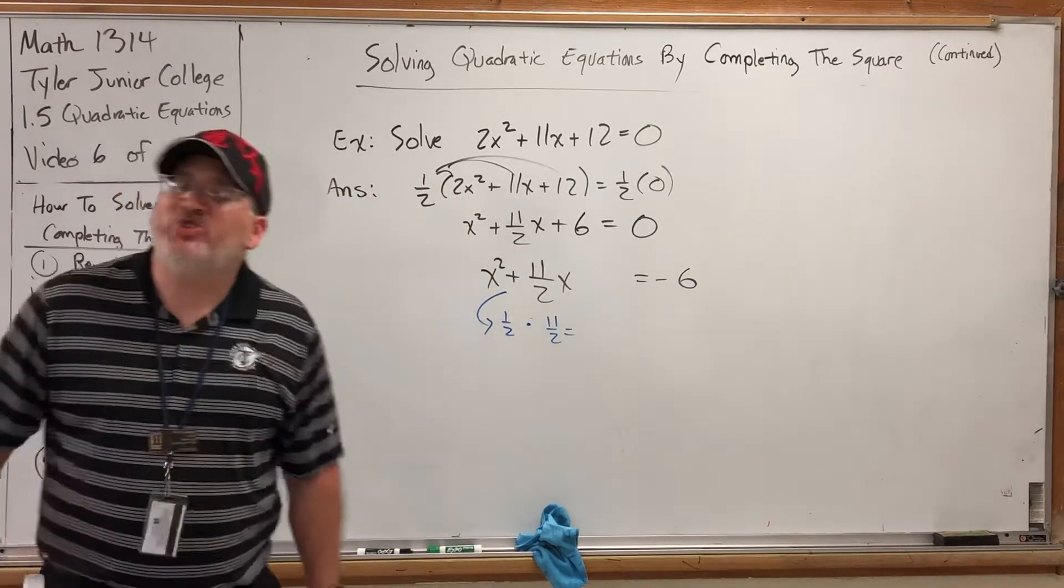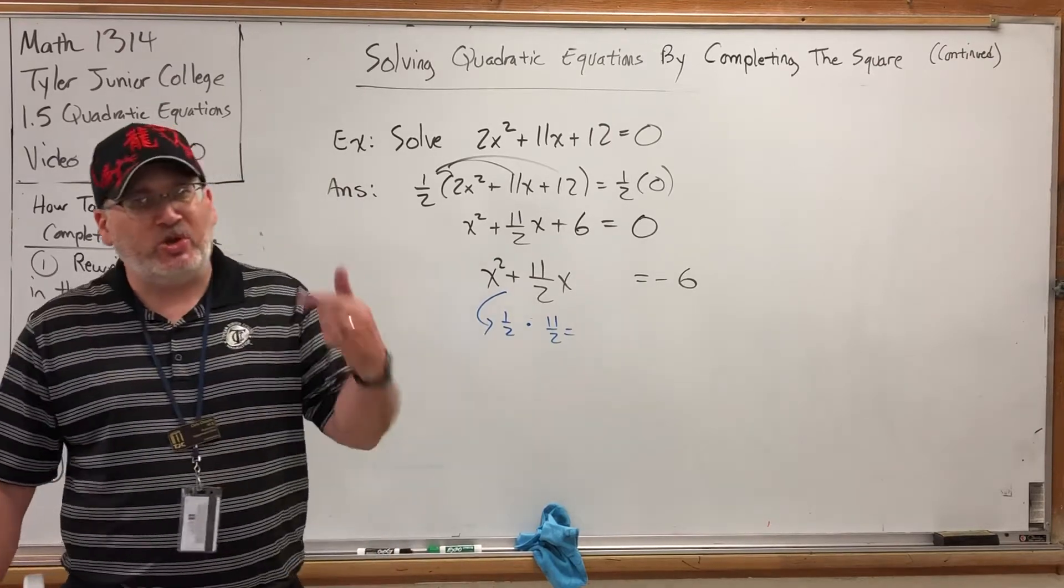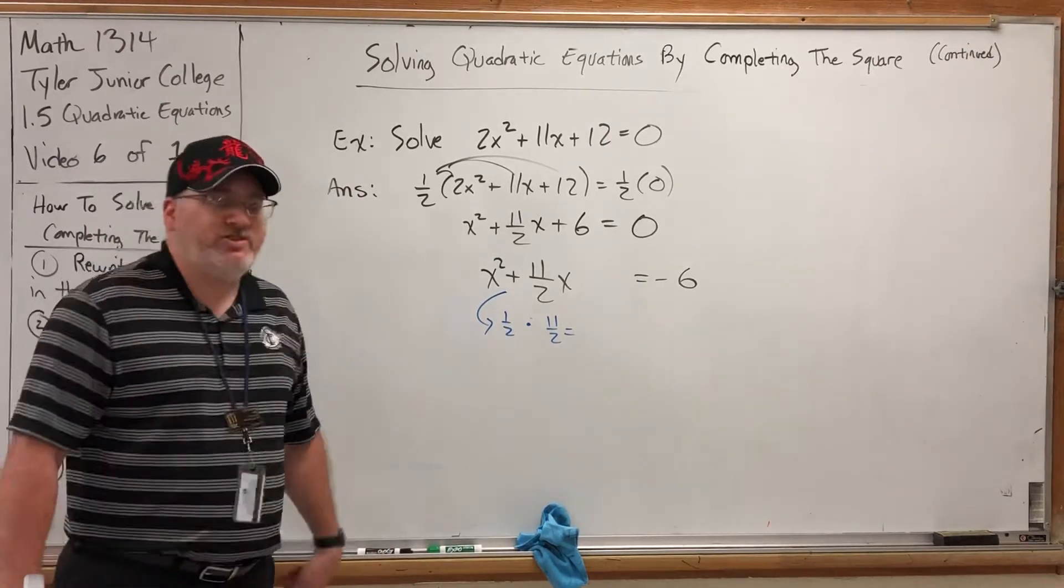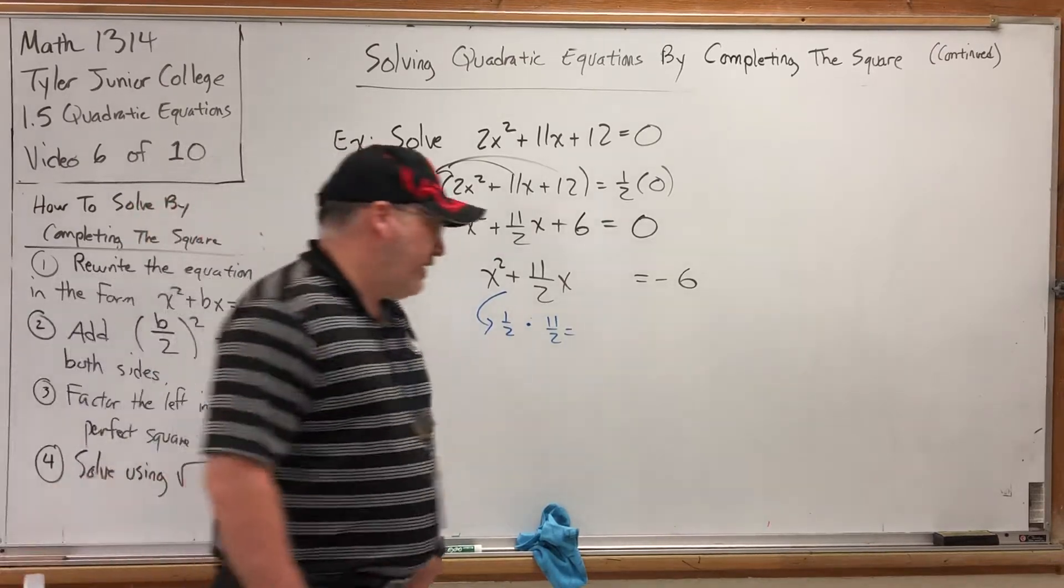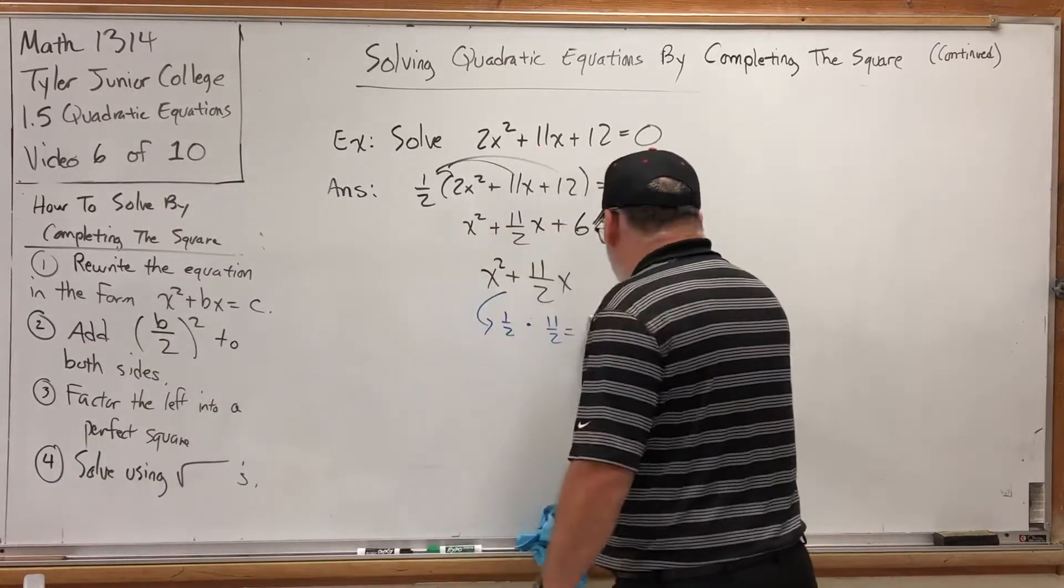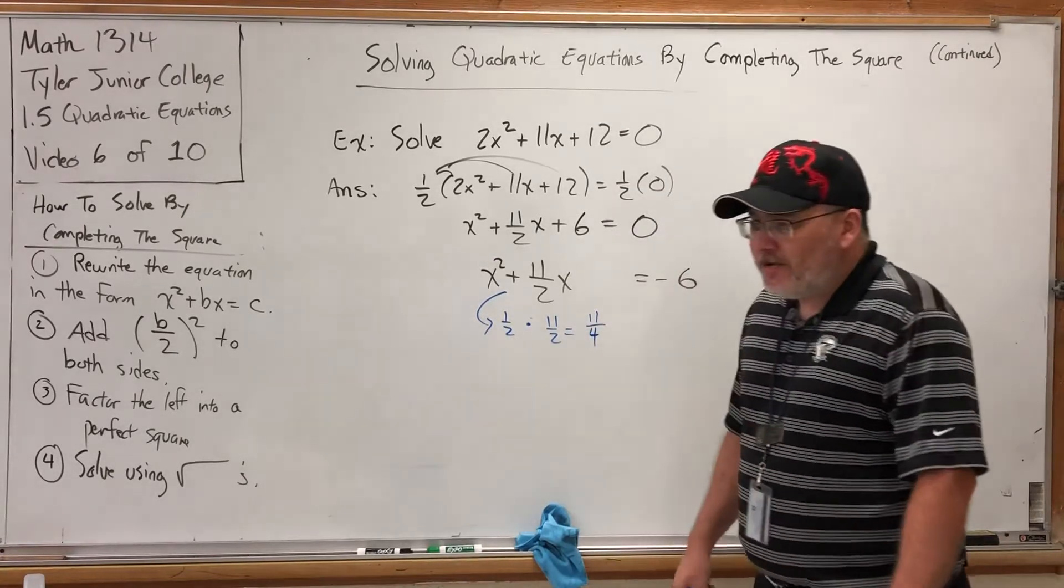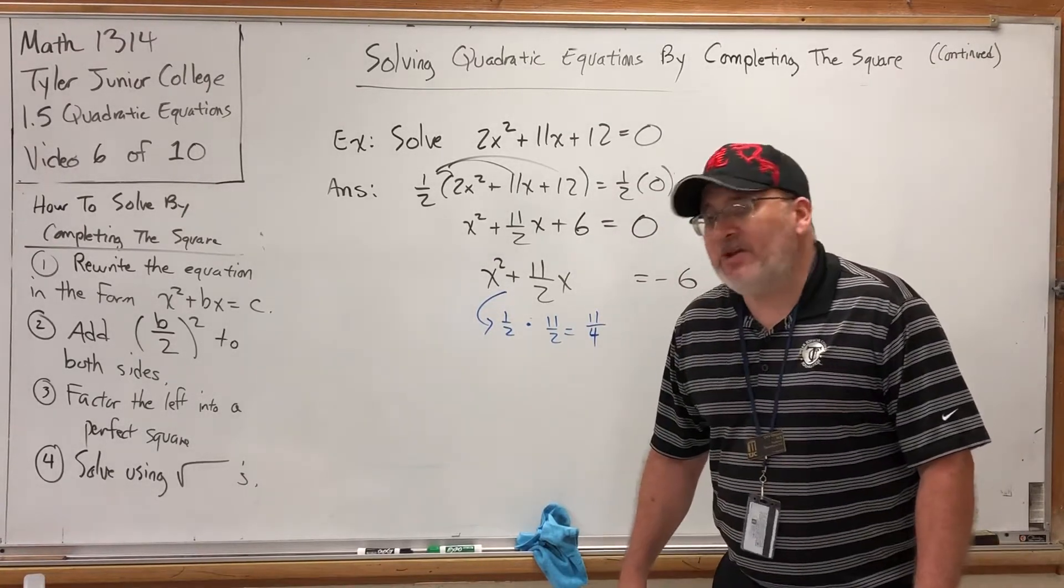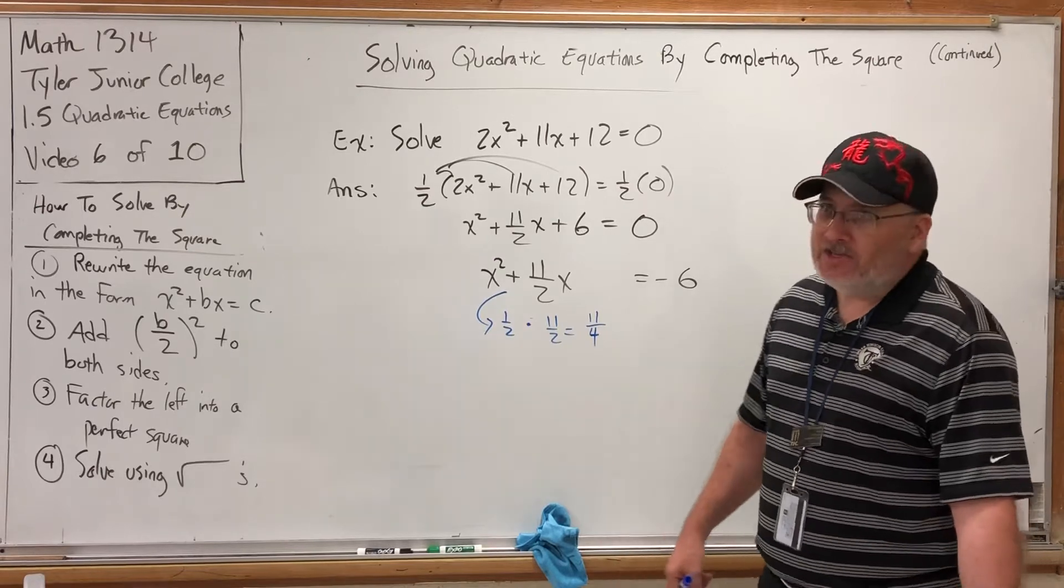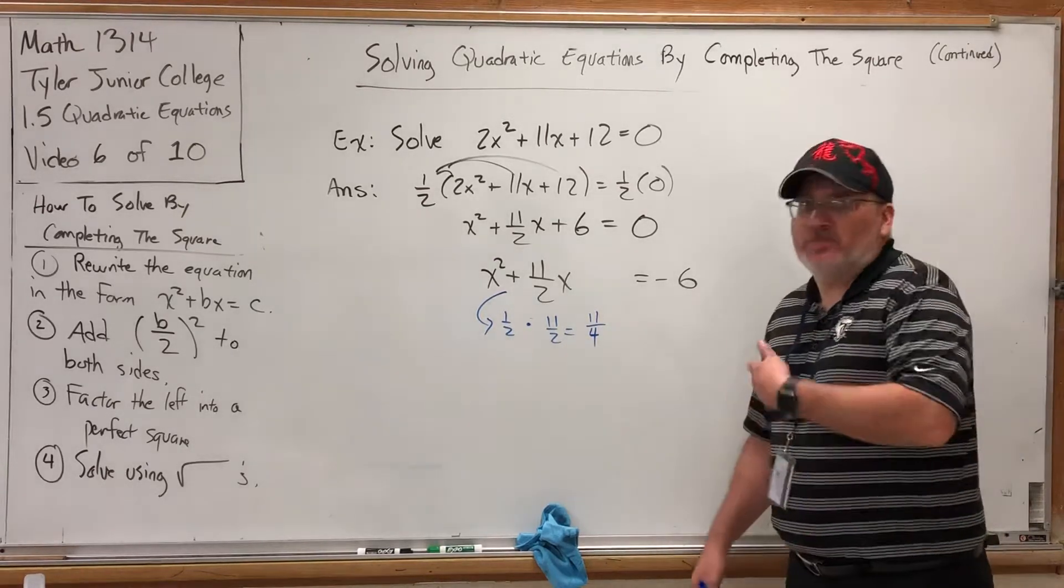And multiplying fractions is the easiest thing to do because it's the only thing that's intuitively correct. Multiply across the top. Multiply across the bottom. 1 times 11 is 11. 2 times 2 is 4. It's a common denominator. So we're not adding. Common denominators are only required for adding and subtracting. For multiplying, you just multiply straight across.